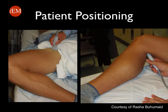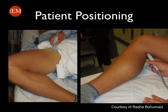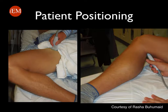Proper patient positioning can greatly improve image quality. Have the patient externally rotate the hip to better visualize the common femoral vein, as shown in the image on the left. For the popliteal vein, have the patient either hang their leg below the edge of the bed or slightly flex the knee. If possible, having the patient lie prone will also help the study.